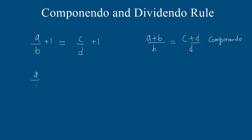Next, we have A/B equals C/D. If we subtract 1, we will get (A-B)/B equals (C-D)/D. We call this rule dividendo.